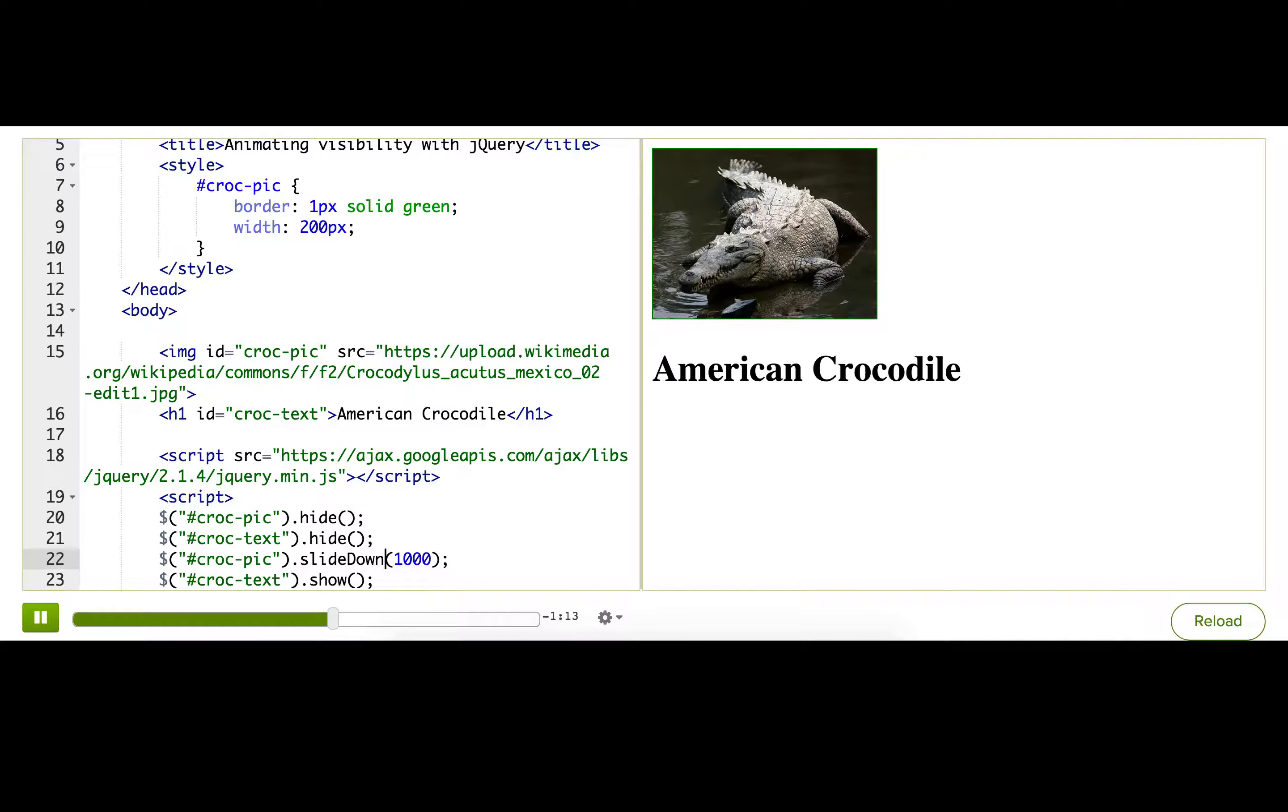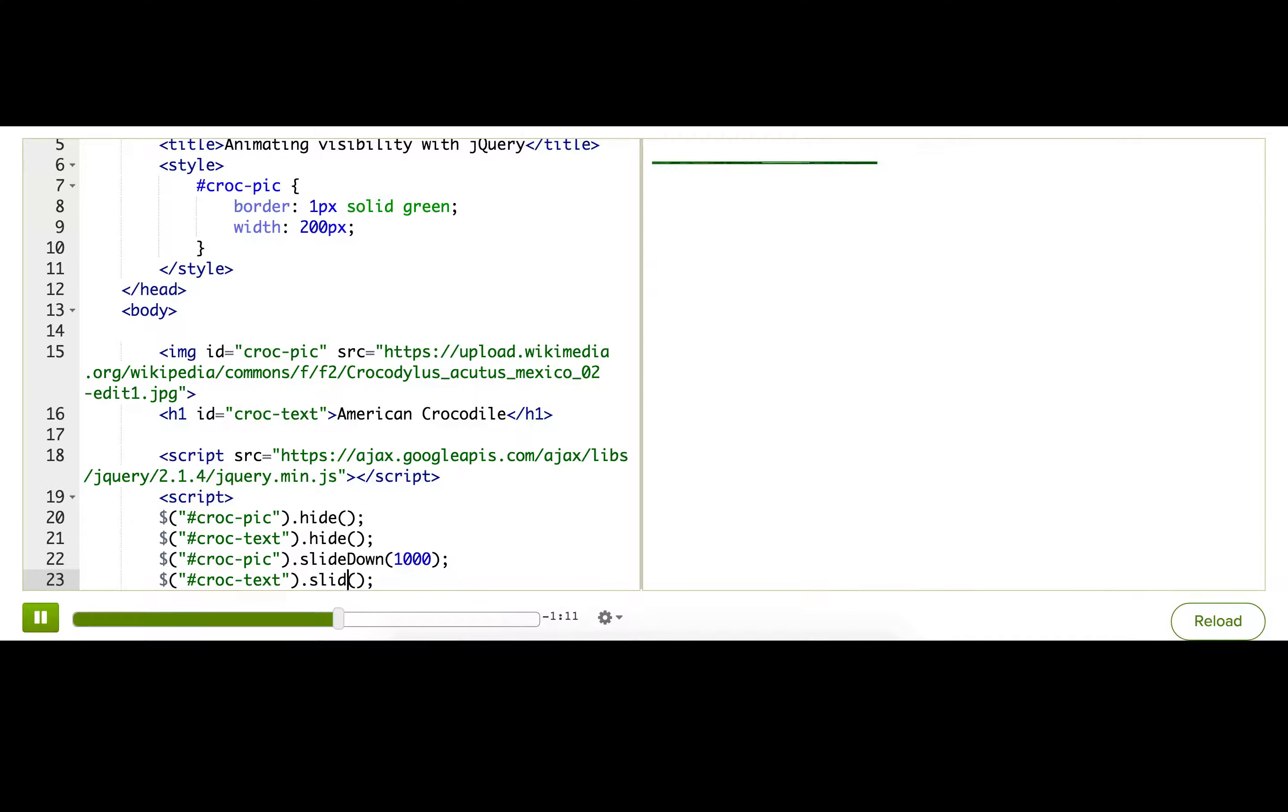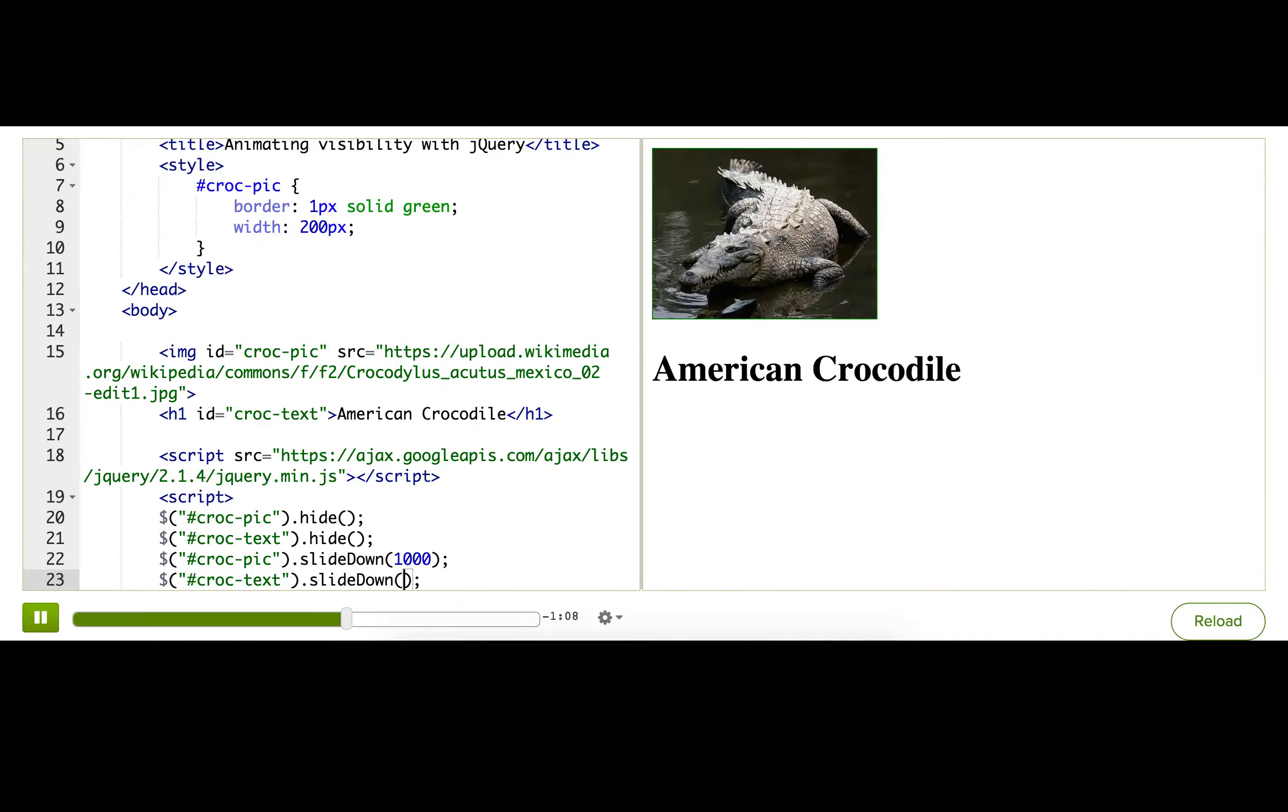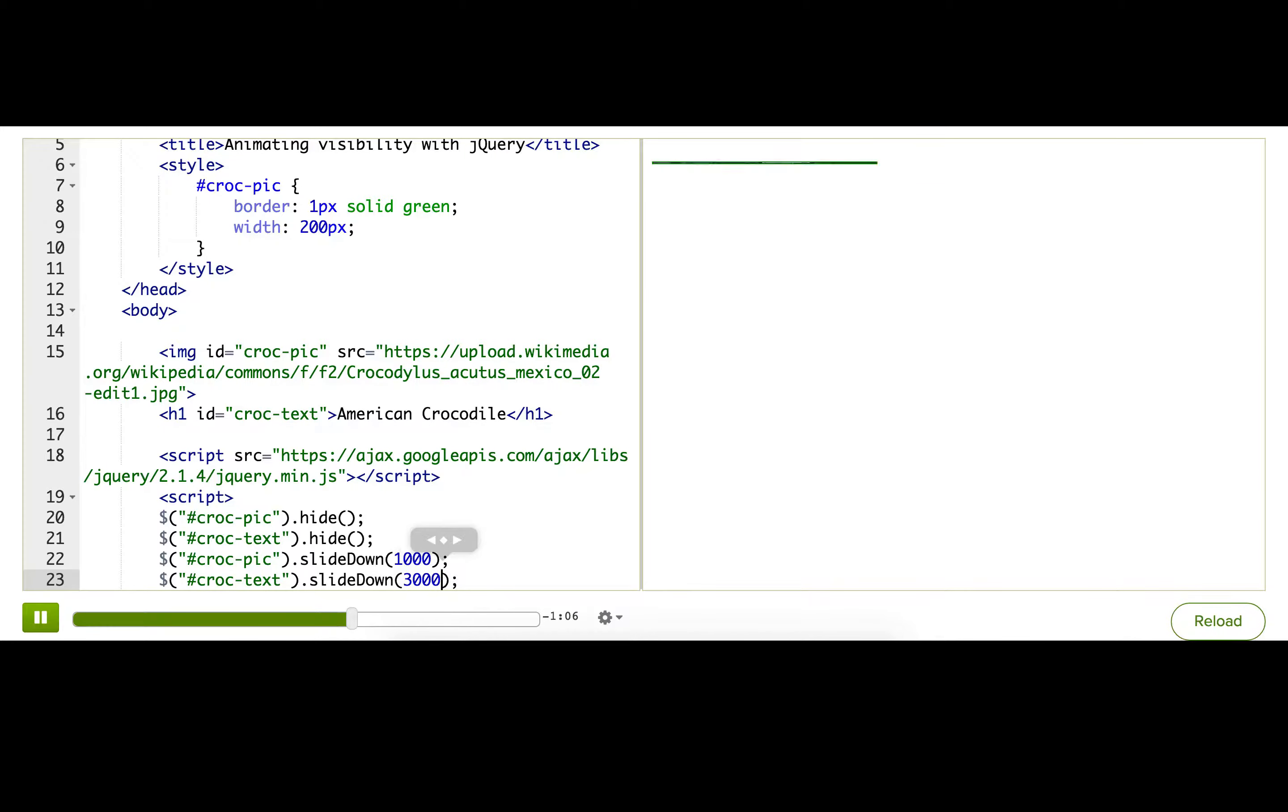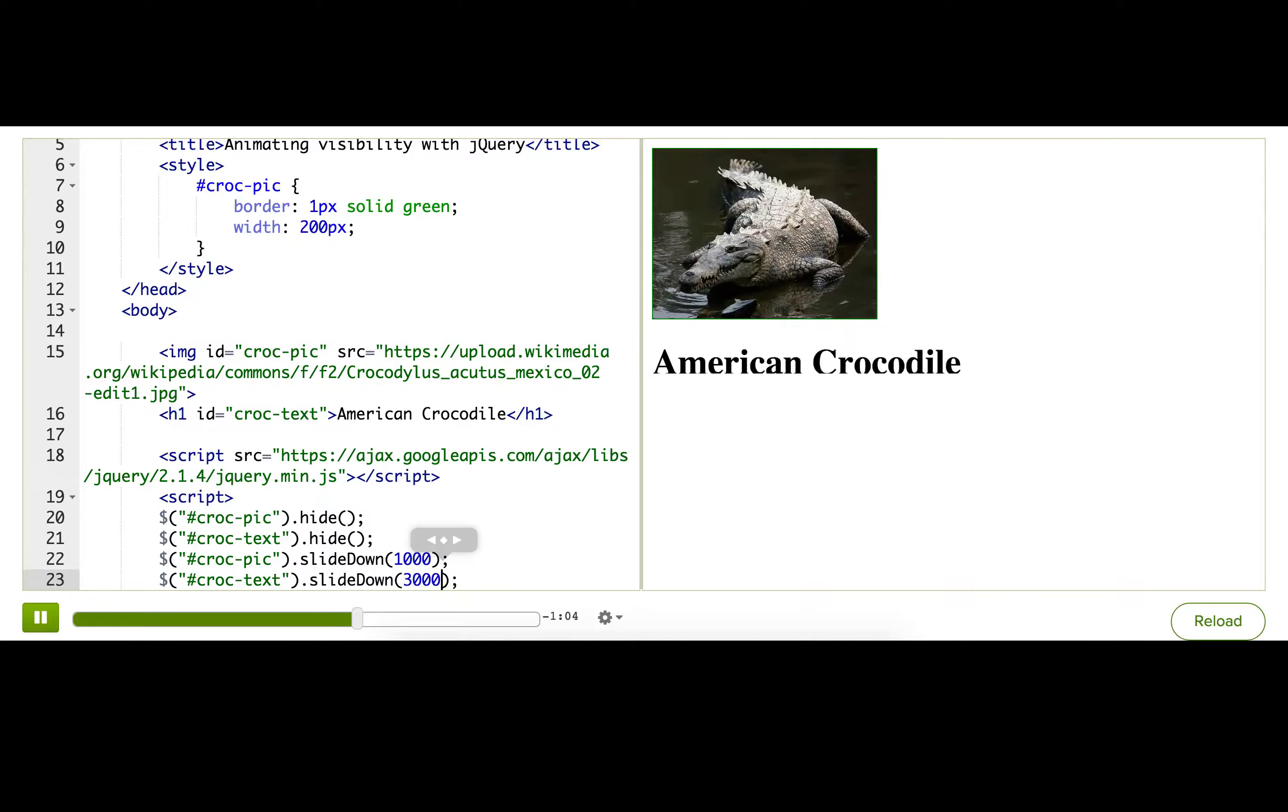Now let's animate the text. I'll call slideDown again. And I'm going to make the duration a little longer to make sure we can really see it. There. Nice. It's slow. Okay.